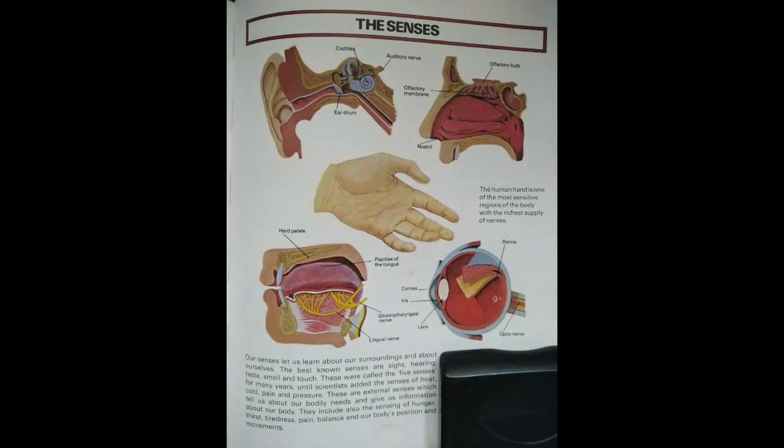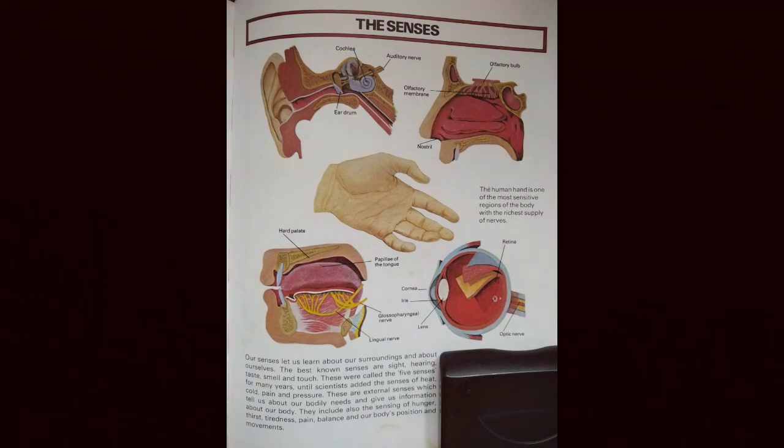These cutaway diagrams of the ear, nose, mouth and eye show their internal structure. We use the five senses — sight, smell, touch, hearing and taste — to interpret the world around us, and receptors in these organs send nerve impulses back to the brain for interpretation.